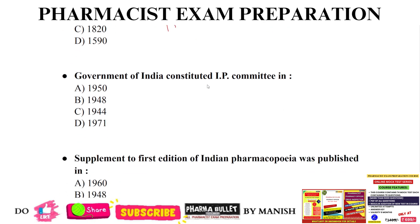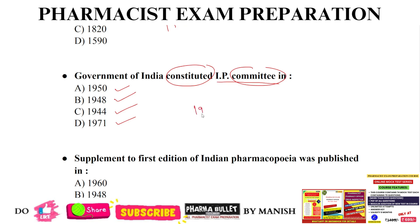Next question: Government of India constituted IP committee in which year? Options: 1950, 1948, 1944, or 1971? The correct answer is 1948, option B. This is also a previous year question.